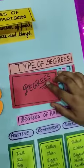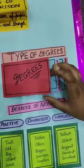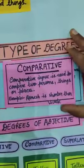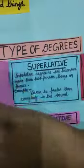Types of degrees. There are three types of degrees. Positive degree, comparative degree and superlative degree.